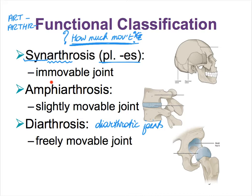That leaves us with amphiarthrosis. The prefix 'amphi' — think of an amphibian like a frog or a salamander, animals that can live both in water or on land, so they're sort of in between. Similarly, amphiarthroses are not completely mobile but not totally immobile either — they're sort of in between. That's your functional classification. Remember the question: how much movement is allowed? That leads to the functional classification in terms of how functional these joints are in moving our skeleton.